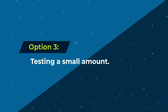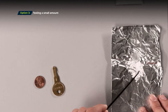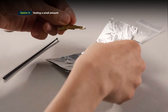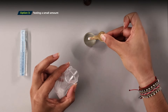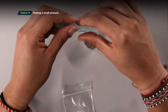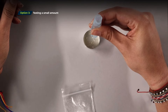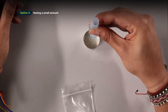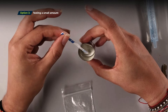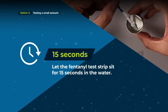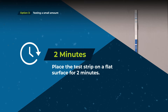Option 3: testing a small amount. We're now going to measure out 10 milligrams of powder for testing purposes. You can use a micro scoop or a key to measure out 10 milligrams — that's enough to cover Abraham Lincoln's hair on a penny. Add the powder to a small container. For meth, MDMA, and ecstasy, add one teaspoon or five milliliters of water; for all other drugs, use half a teaspoon or 2.5 milliliters. Place the wavy end of one fentanyl test strip into the container with the drug dissolved in water. Let the strip absorb the water for 15 seconds, then remove it and place it on a flat surface for two minutes.